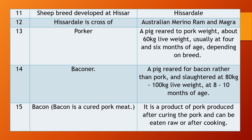Question 14. The similar terminology — Baconer. A pig reared for bacon rather than pork, slaughtered at 80 to 100 kg live weight, usually achieved at 8 to 10 months of age. That is called a Baconer.